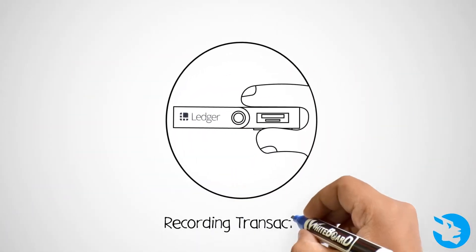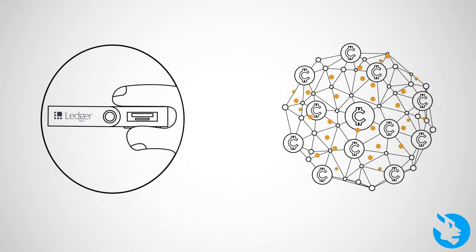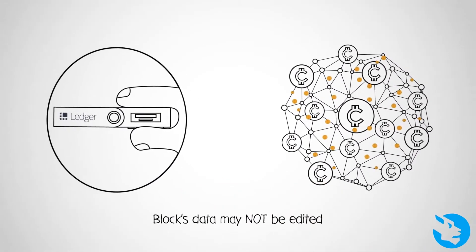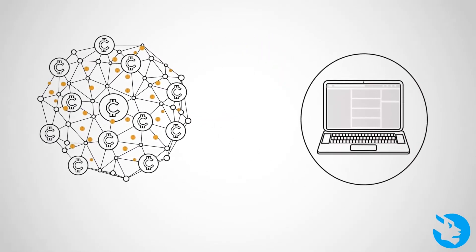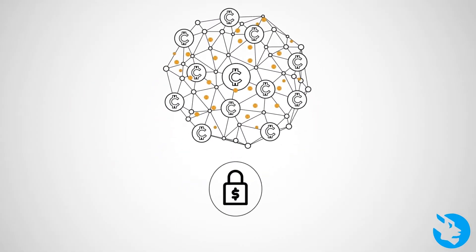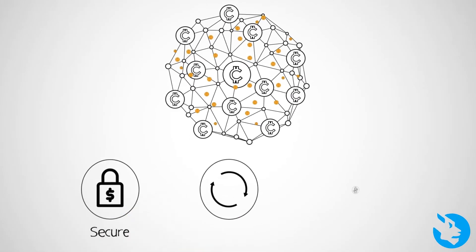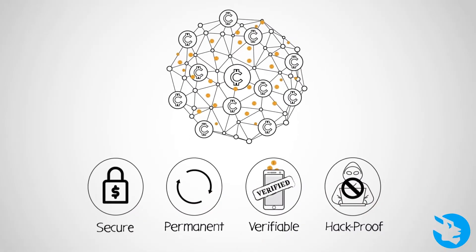After recording a transaction, the block's data may not be edited without altering all subsequent blocks, which requires consensus of the network majority and much computational effort. This makes blockchain transactions secure, permanent, verifiable, and virtually hack-proof.